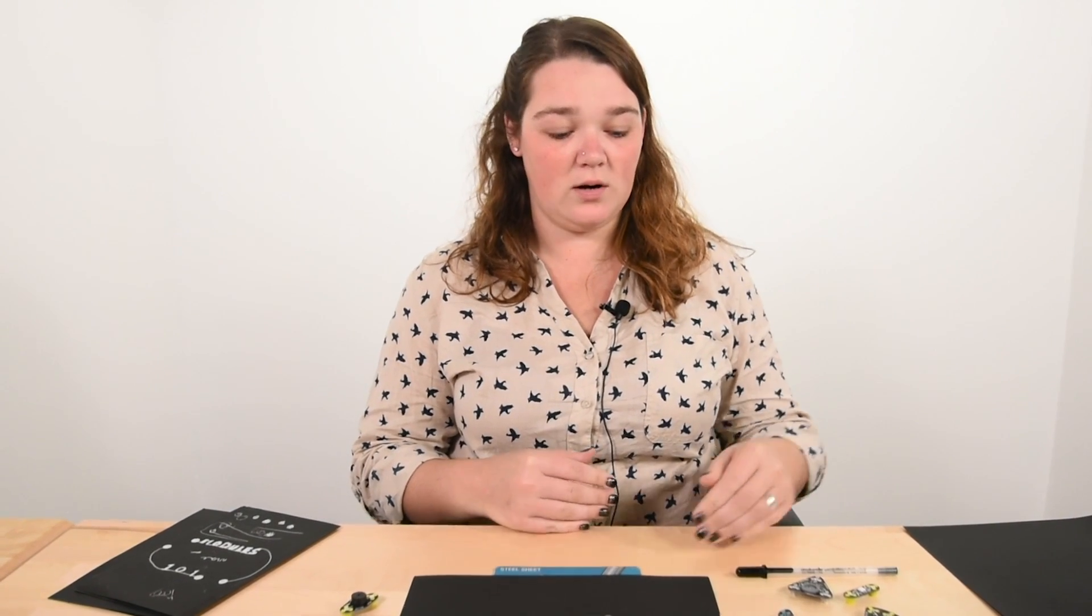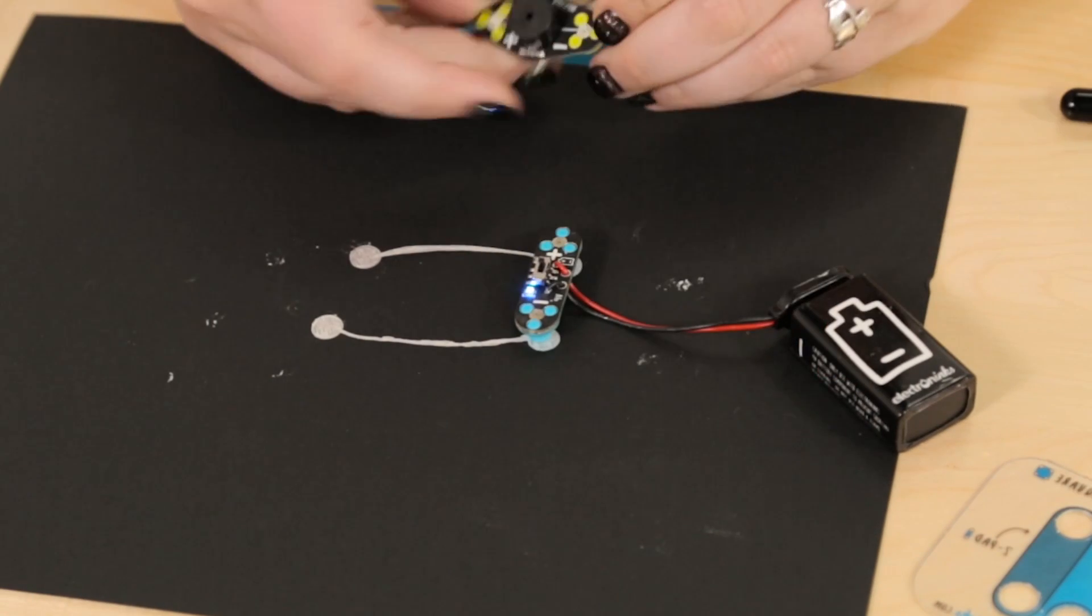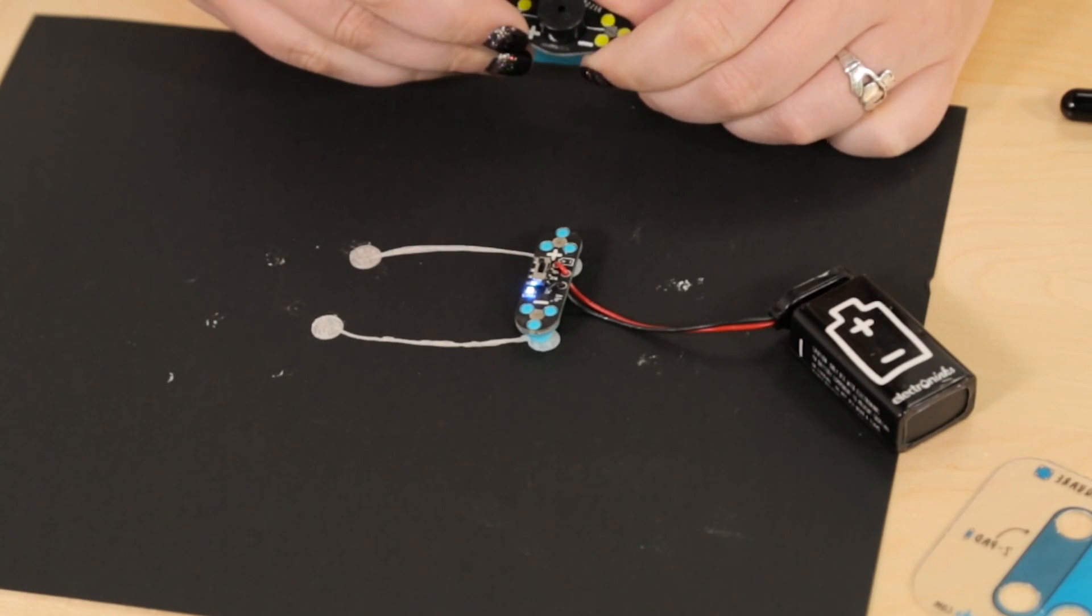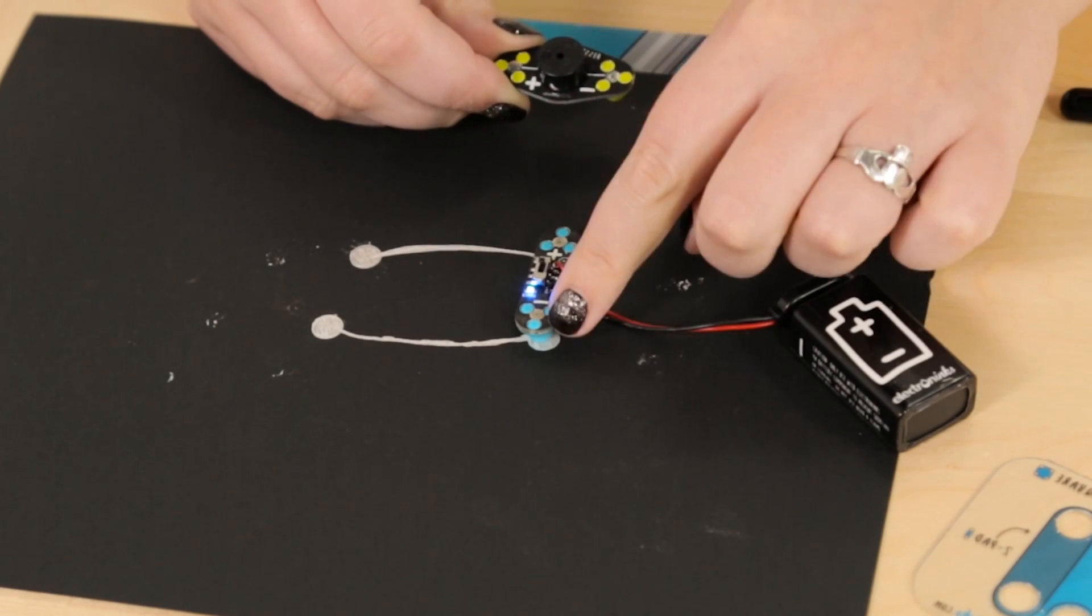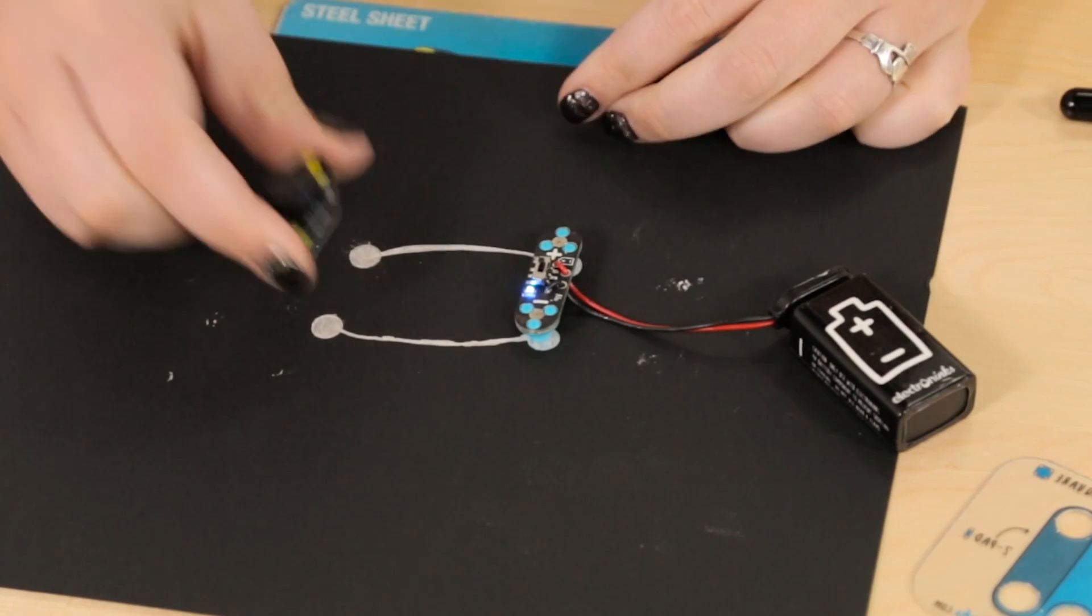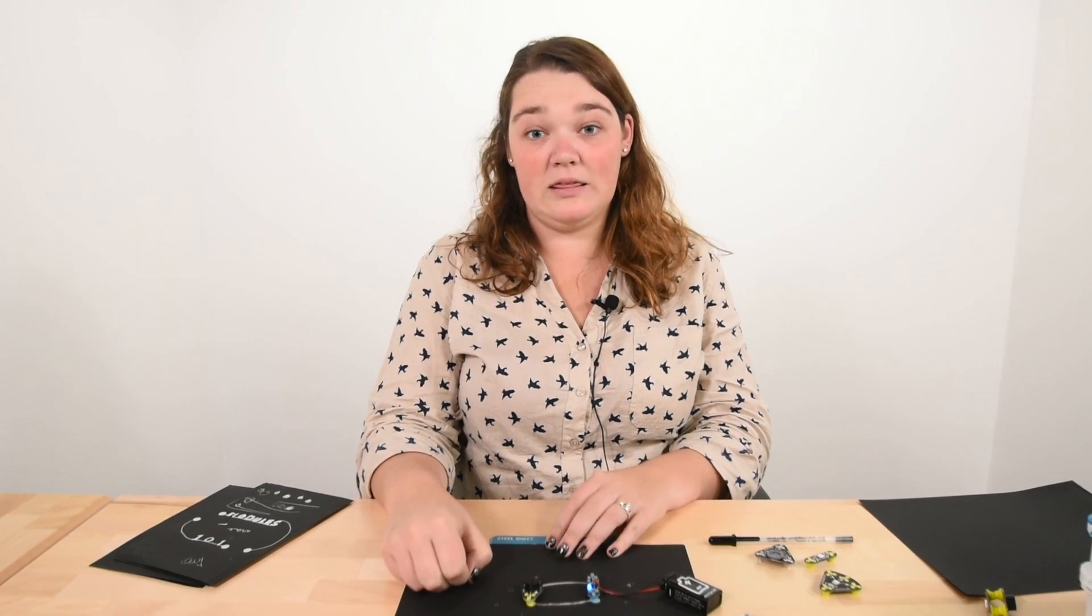Some of our modules have specific polarity, which means that you need to align them with the plus and the minus of the battery in order to get them to work. So I'm going to take my battery and my buzzer and make sure that the plus on the buzzer lines up with the plus on the battery and the minus on the buzzer lines up with the minus on the battery. Put those on and I get a sound. If I put it on backwards, I got nothing.